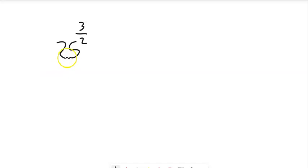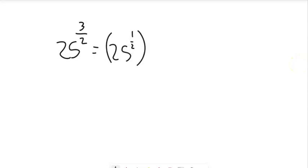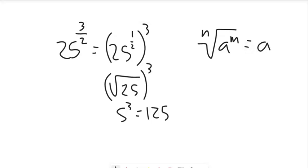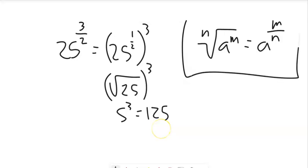Now look at 25 to the 3/2. Think of this as 25 to the 1/2, then to the 3rd power — because 3 times 1/2 is 3/2. So this is the square root of 25 cubed, which is 5 cubed, which is 125. We can generalize: a to the m/n is the nth root of a to the m — the exponent goes on top and the radical index goes on the bottom.